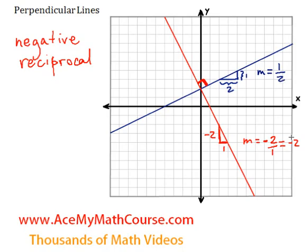So negative 2 is the negative reciprocal of 1/2. Why is that? What is the reciprocal of 1/2? It's just 2 over 1. What is the negative reciprocal of 1/2? Well, it will be just negative 2 over 1. So every time we can just flip the fraction and switch the sign, that will be the negative reciprocal of the original fraction, and these slopes are perpendicular.